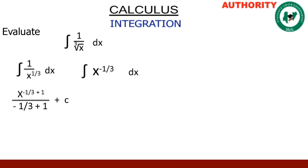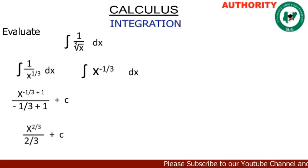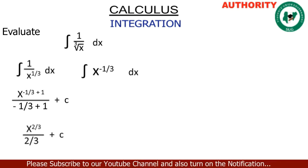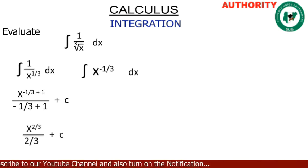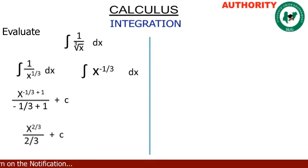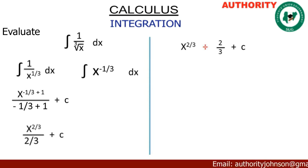Plus c. That equals x raised to the power — negative 1/3 plus 1 is going to give us 2/3 — all over 2/3, plus c. Now this x raised to the power 2/3 all over 2/3 plus c — it can be written as x raised to the power 2/3 divided by 2/3.